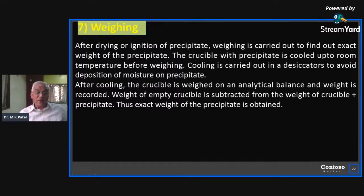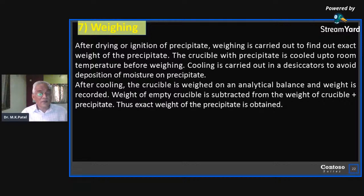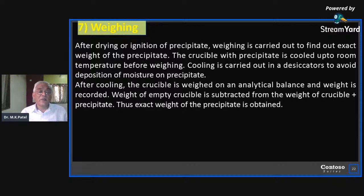This gravimetric analysis involves all seven following steps, and in each step great care must be taken. Each step's principle must be followed properly. For example, during ignition, we want the precipitate of the product itself, so unwanted precipitate must be removed.